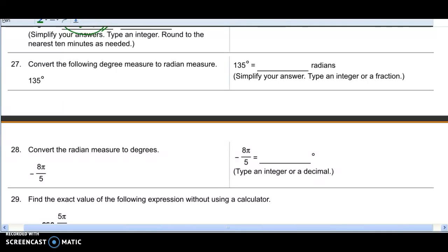All right, let's wrap up this review with these last few problems. Problem 27 wants us to convert the following degree measure to radian measure. You need to know the formula or the convention for doing this.